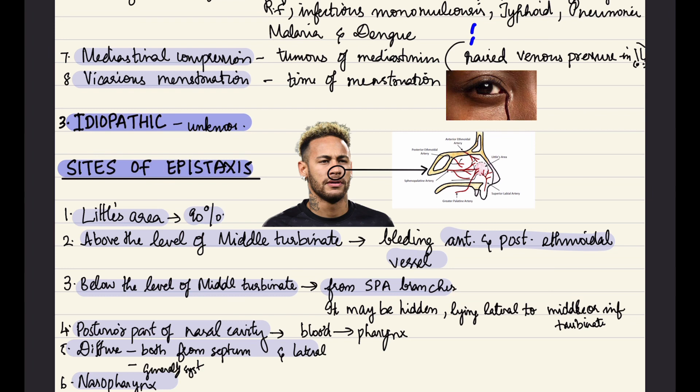We have epistaxis above the level of middle turbinate - bleeding at the anterior and posterior ethmoidal vessels. If it is below the level of middle turbinate, it is from sphenopalatine artery branches. It may be hidden or lying lateral to middle or inferior turbinate.